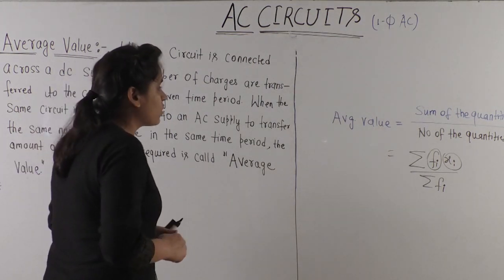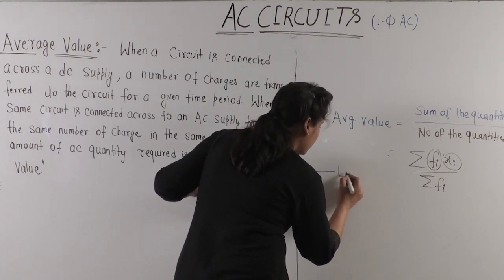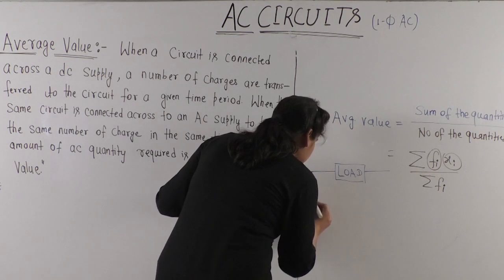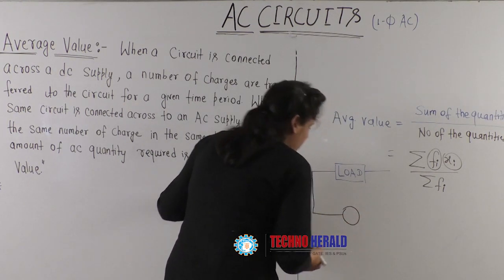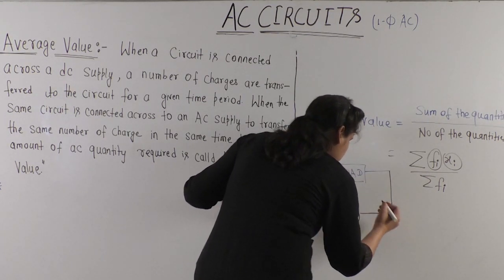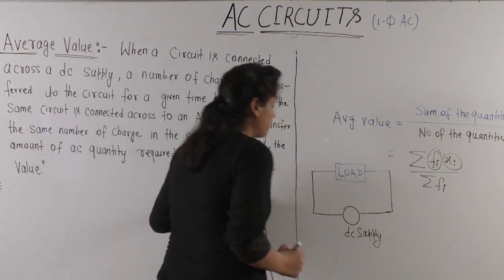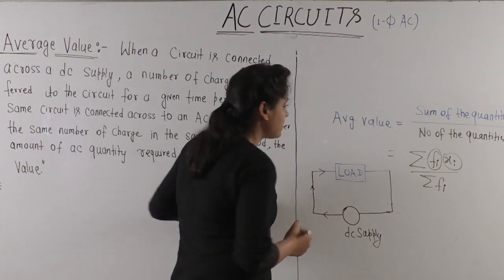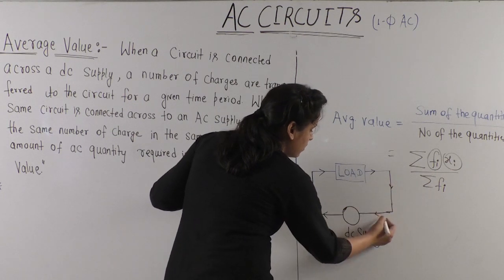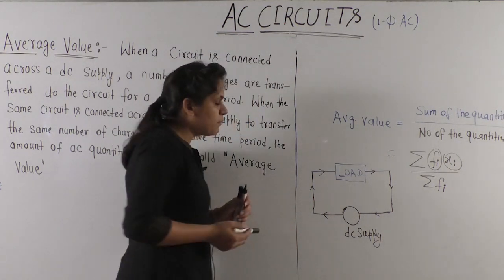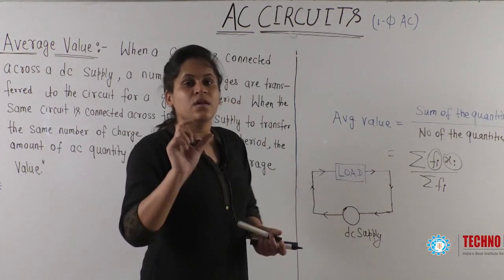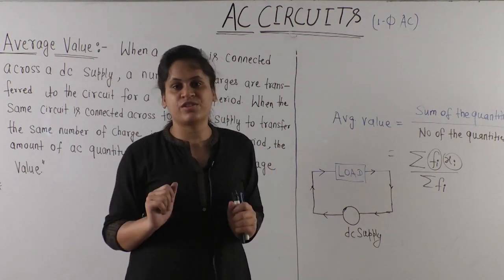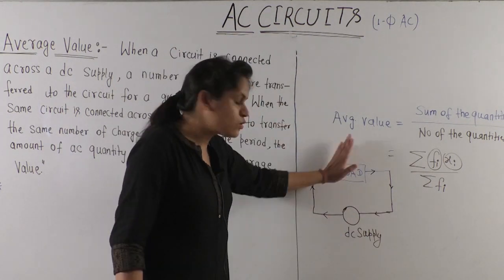What is the definition of average value? When you connect some DC supply to a circuit — say I have a load — and in this load I have connected a DC supply, which can be a voltage source or current source. So when you give DC supply to this circuit, this DC supply causes some transfer of charge in the circuit. Transfer of charge means current — current means charge in motion. So when you give DC supply to this circuit, some amount of charge flows. You start your observation from some instant, and for a particular time T, some amount of charge flows from this DC supply.